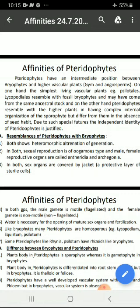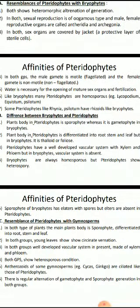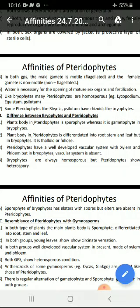Resemblances of pteridophytes with bryophytes: Dono ke andar hi heteromorphic alternation of generation paaya jaata hai. Dono groups mein sexual reproduction oogamous prakar ka hota hai. Male aur female reproductive organs ko antheridia aur archegonia kaha jaata hai. Dono mein hi sex organs ek protective layer jacket se covered rehte hain. Dono groups mein male gamete chalte ya motile hote hain.